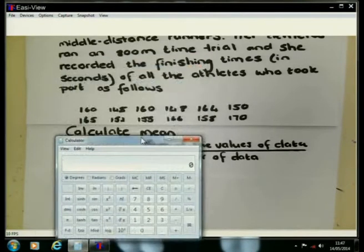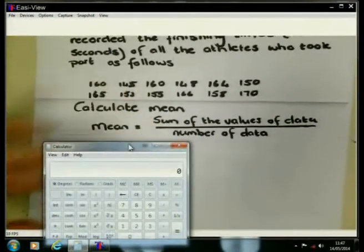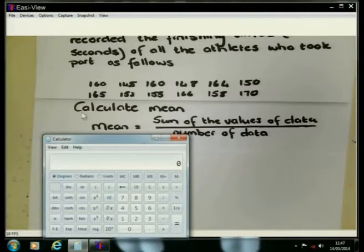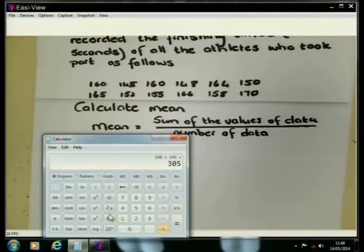So what I am going to do, I am going to add all the values that I am having in this data set. We are going to add the values. That is what the word sum means. So if we go back, here is my calculator now on the screen. I am going to add the values: 160 plus 145 plus 160 again plus 148 plus 164.